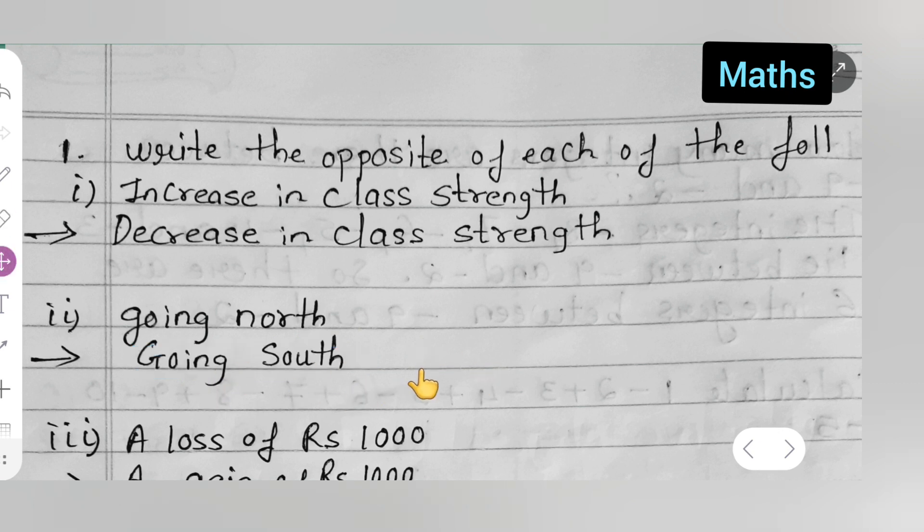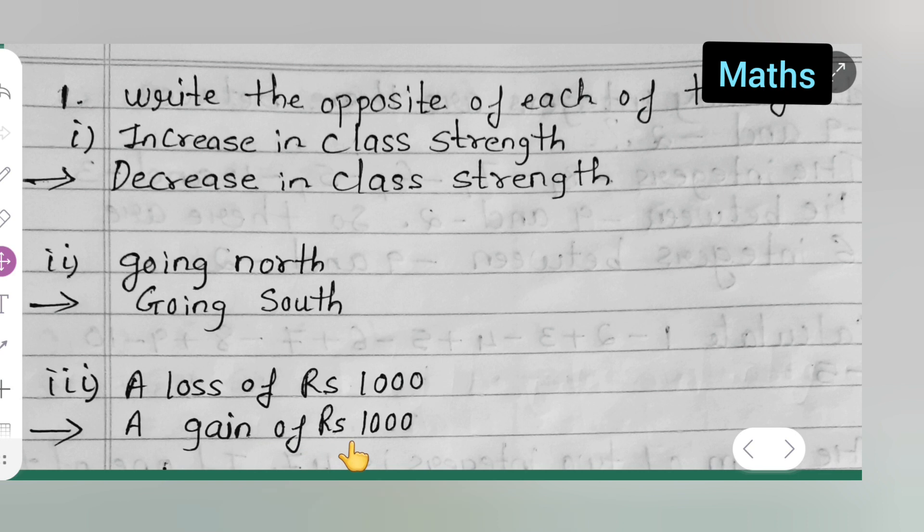Next, opposite of a loss of rupees one thousand. The opposite of loss of rupees one thousand is a gain of rupees one thousand. You all can take down this. I hope you all have understood.